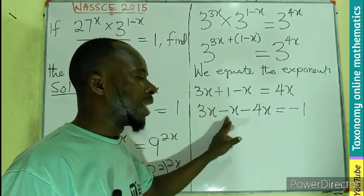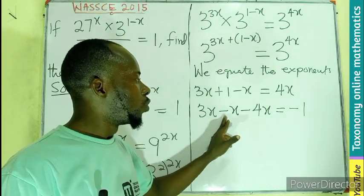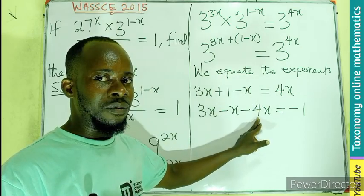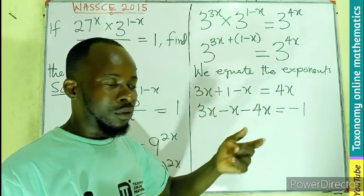Positive 1 crossing to become negative. Positive 4 becomes negative 4. So 3 minus 1, that will be 2. 2 minus 4, that will be minus 2.